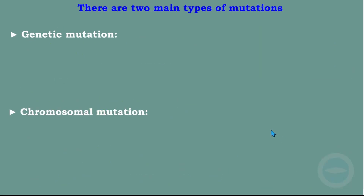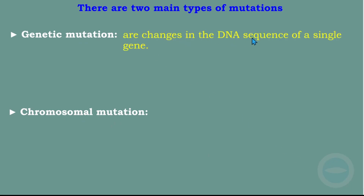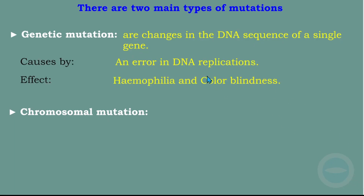There are two main types of mutation: gene mutation and chromosomal mutation. Gene mutations are changes in the DNA sequence of a single gene. Gene mutation is caused by an error in DNA replication. The effects of gene mutation include hemophilia — the inability of the blood to clot — and color blindness, which is the inability to differentiate between different colors.